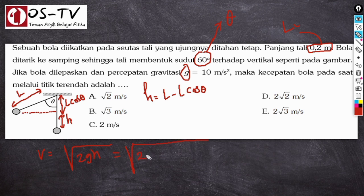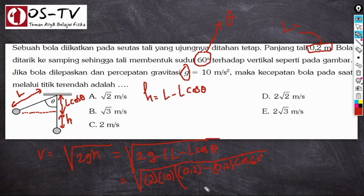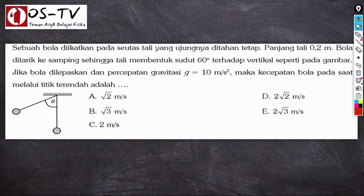Kita dapat menyelesaikan persoalan ini dengan rumus cepat: V = √(2GH) = √(2 × G × (L − L cos θ)). Kalau kita masukkan nilainya: V = √(2 × 10 × (0,2 − 0,2 × cos 60°)). Kalau perhitungan ini diselesaikan, hasilnya adalah √2 meter per sekon. Sehingga jawaban dari soal ini adalah A.